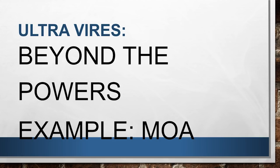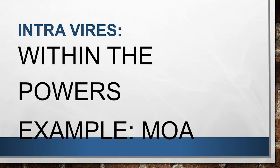Next is ultra vires, meaning beyond the powers. You can use this legal term in many answers to make your answer look very complete and professional. For example, you can say anything which is beyond the MOA is ultra vires. The objects clause of the MOA defines the object, so anything the company does beyond the powers in the MOA — you can say the company is doing activities which are ultra vires, meaning beyond the powers of the MOA.